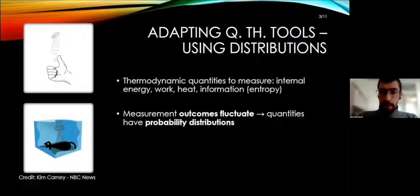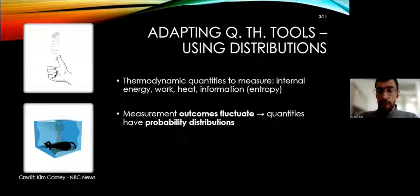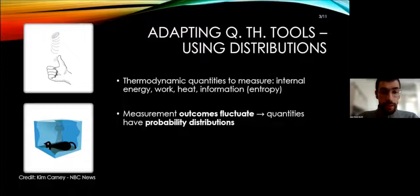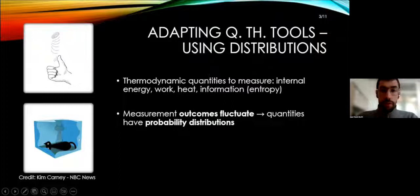One thing that we can do is to adapt concepts from the field of quantum thermodynamics, which is an emerging field right now. First of all, we need to work on which quantities we'll be interested in: thermodynamic quantities such as internal energy, work, heat, or information, or entropy. But when we measure these quantities, even though repeating the same experiment exactly, the outcomes will give out different amounts. So we'll have probability distributions. These probabilities come from two sources: statistical fluctuations and quantum fluctuations from superposition and measurement.